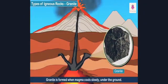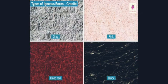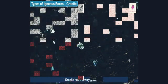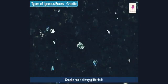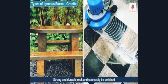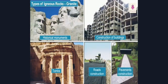Granite is the most common igneous rock and is formed when magma cools down slowly under the ground. Granite is found in four colors: gray, pink, deep red, and black. It has a silvery glitter to it and is a strong, durable rock that can easily be polished. Granite is used in historical monuments, tombs, construction of buildings, roads, and pavements.